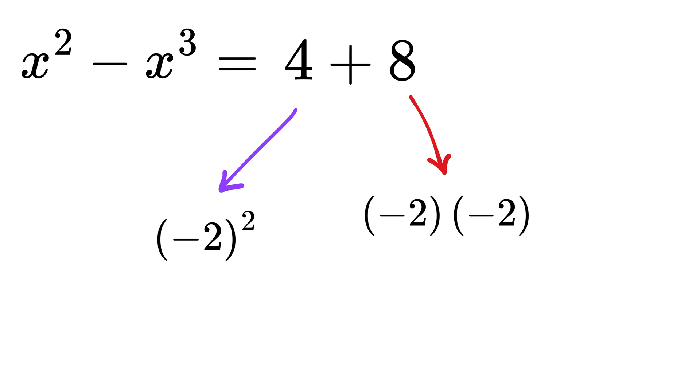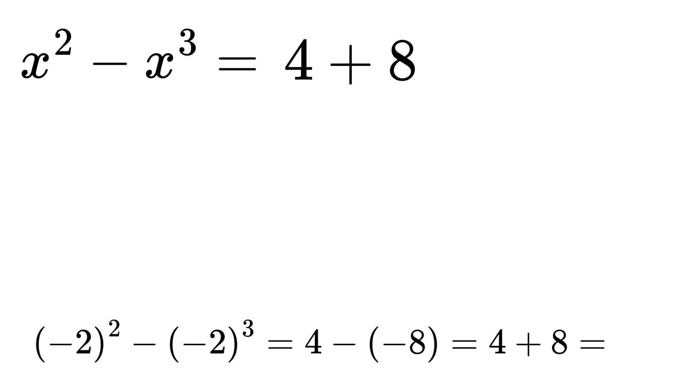Also, negative 2 times negative 2 times negative 2 equals negative 8. So, negative 2 whole cube equals negative 8. This negative 2 whole square minus negative 2 cube becomes 4 minus negative 8, or plus 8, which is 12.